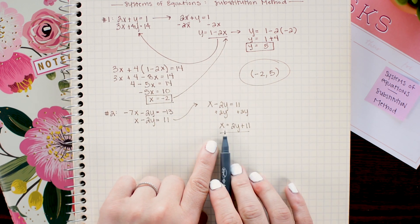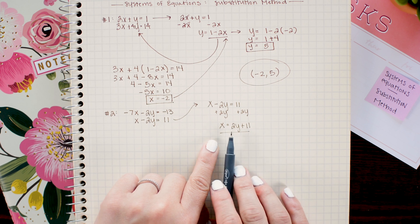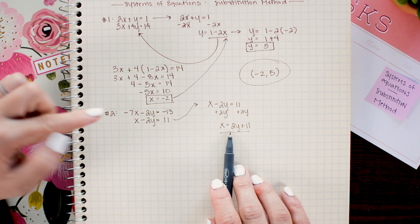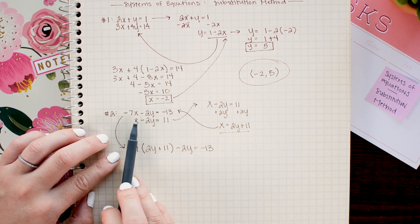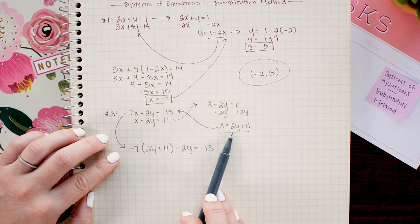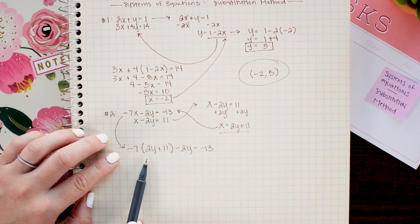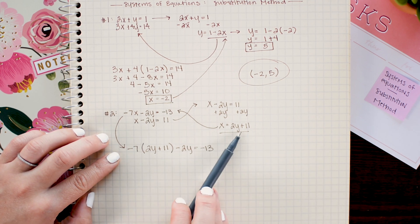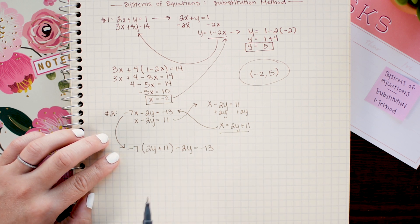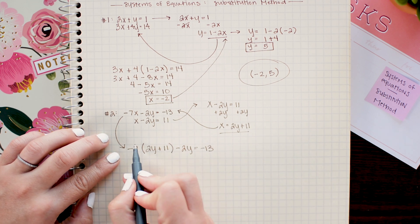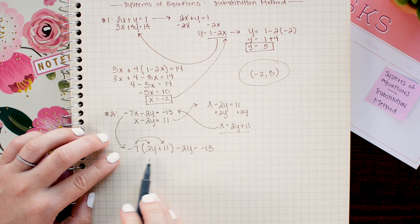Now that I have what x is equivalent to I can go ahead and plug it in for x in the other equation. So here I just replaced x with my equivalent relation which is 2y plus 11 and notice here how when I substituted this relationship in for x I made sure to put parentheses and that's a really important step because that ensures that this negative 7 is going to be distributed to both terms.